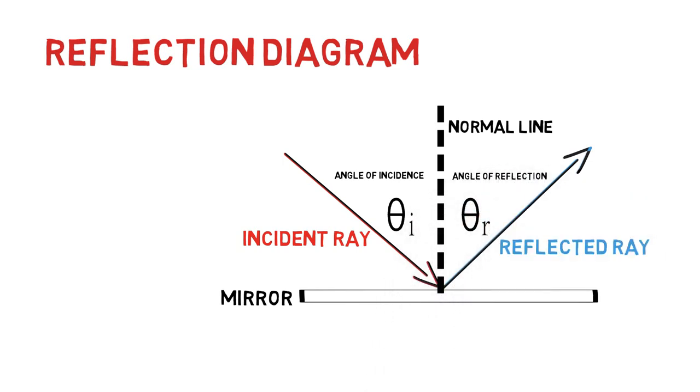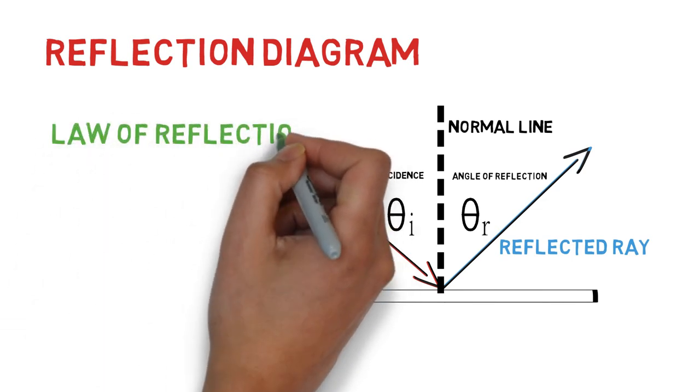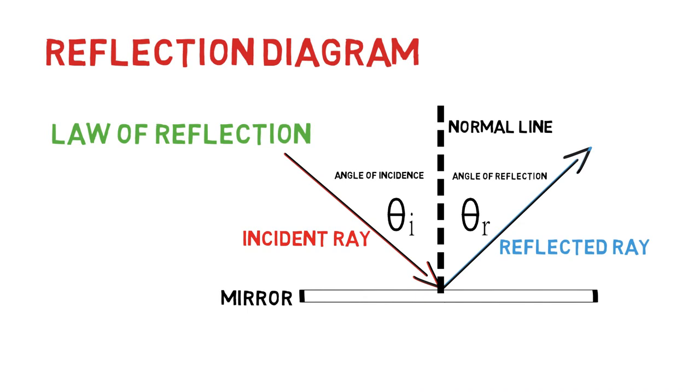This diagram displays a very important concept about reflection known as the law of reflection, which states that all components of reflection are in the same plane and that when light reflects off of a mirror, the angle of incidence is always equal to the angle of reflection.